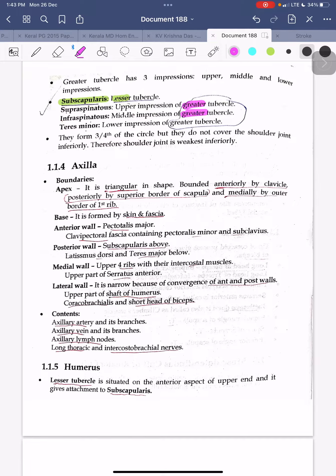Subscapularis is from lesser tubercle. The rest are from greater tubercle: supraspinatus, infraspinatus, teres minor. Supraspinatus from upper impression, infraspinatus middle impression, teres minor from lower impression, all from greater tubercle. Subscapularis is from lesser tubercle.